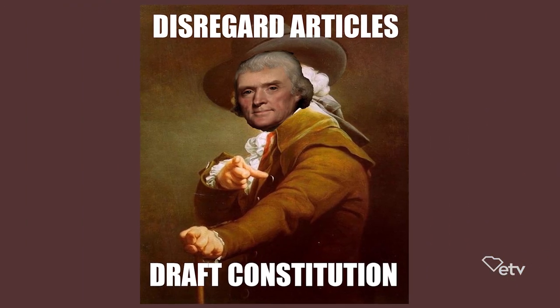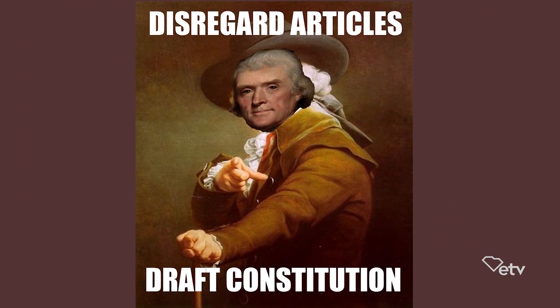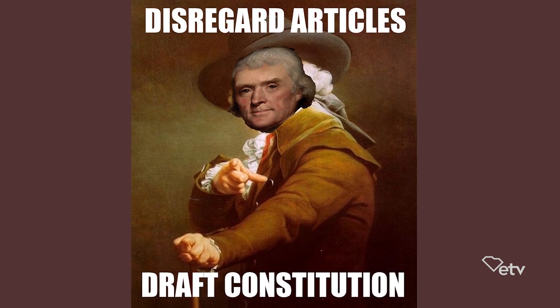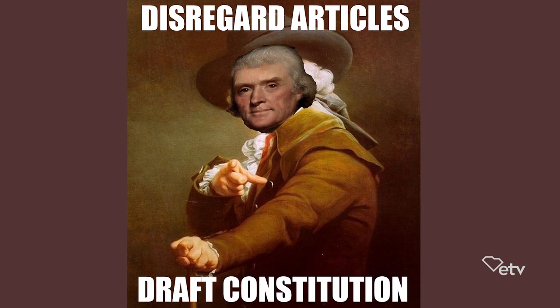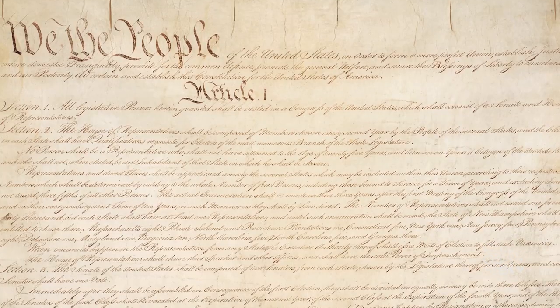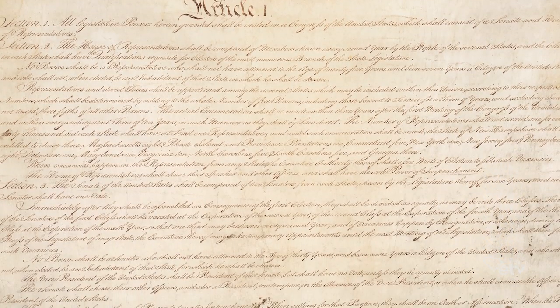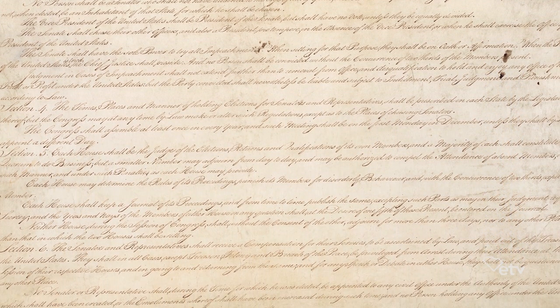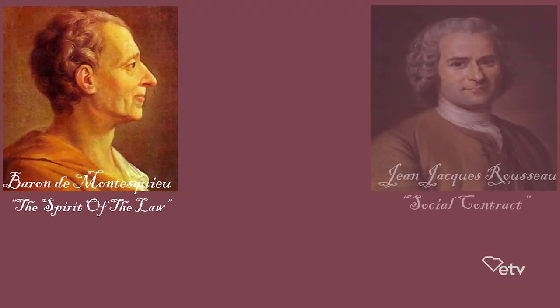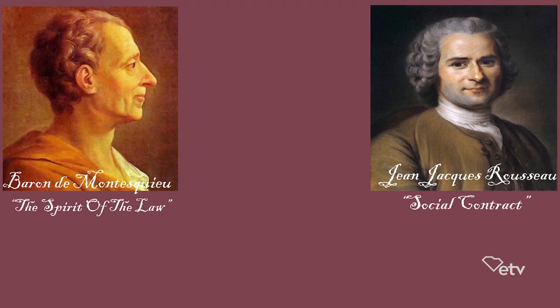It was decided during the Convention that forming a new system of government, instead of fixing the old one, would be more beneficial. This new document, written mostly by James Madison, would be known as the U.S. Constitution. The Constitution was an amalgam of ideas borrowed from state constitutions, the Articles of Confederation, and political philosophers like Baron de Montesquieu, Jean-Jacques Rousseau, and John Locke.